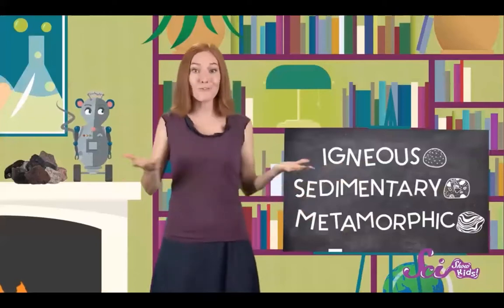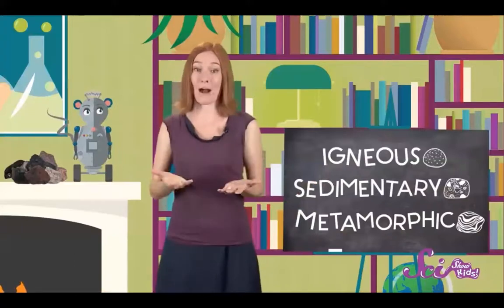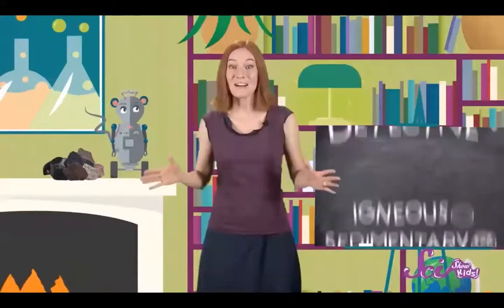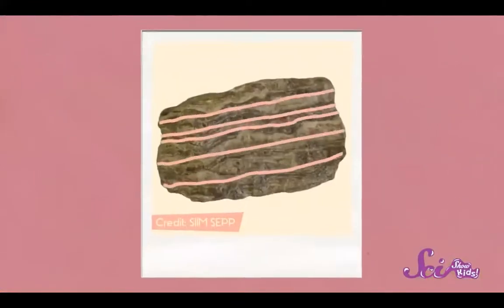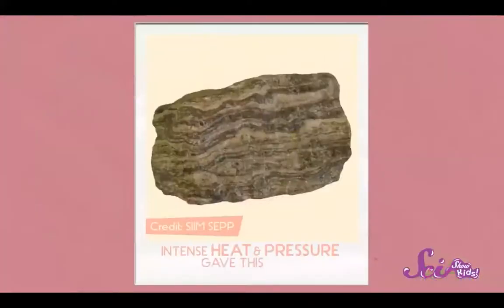So those are the three main kinds of rocks — but how can you tell one from the other? It can be pretty hard, but sometimes we can find clues in how a rock looks or feels. Do you want to play rock detective? Here's our first mystery rock. You see those bendy stripes? This rock looks like it's been stretched and squeezed. Intense heat and pressure gave it those squiggly bands, so because it went through a big change inside the earth, it must be a metamorphic rock.